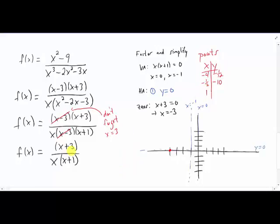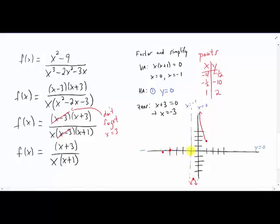I'm going to plug x equals negative four into this simplified version of the function. I'm getting y equals negative one-twelfth. If we plug in x equals negative one-half, we get y equals negative ten. And if we plug in x equals one, we have a much simpler calculation and you get y equals two. Negative one-half, negative ten is down here somewhere. I'm going to pick x equals negative two as well, and I'm getting positive one-half as my answer for that, so I'm getting a point right here.